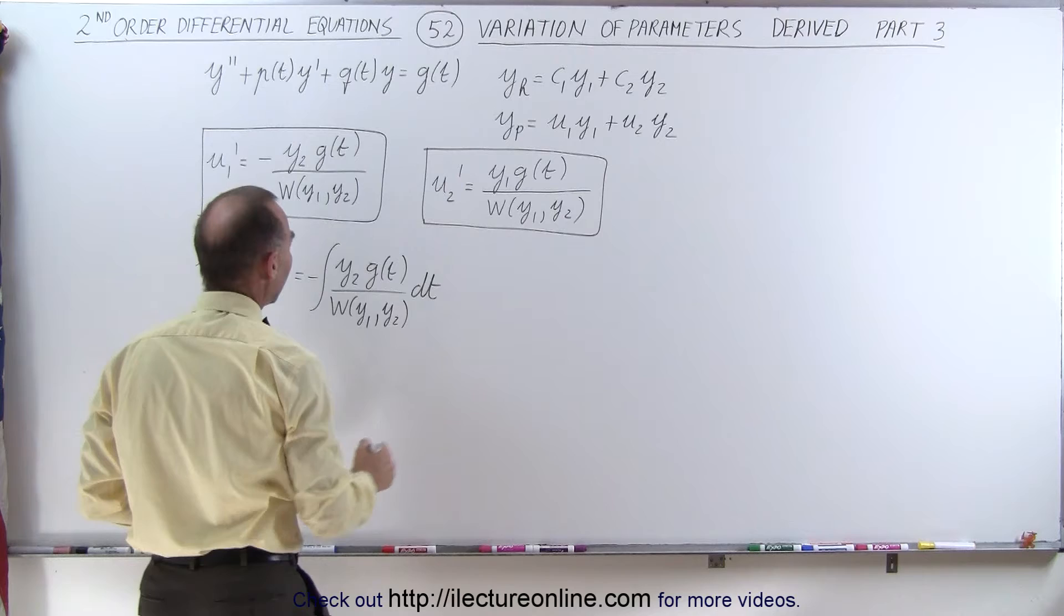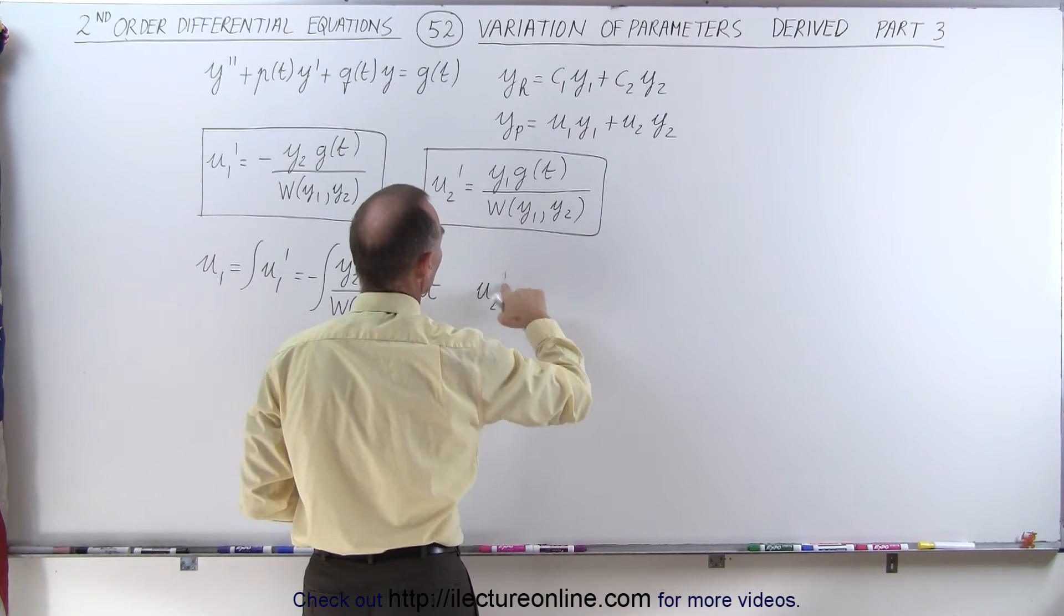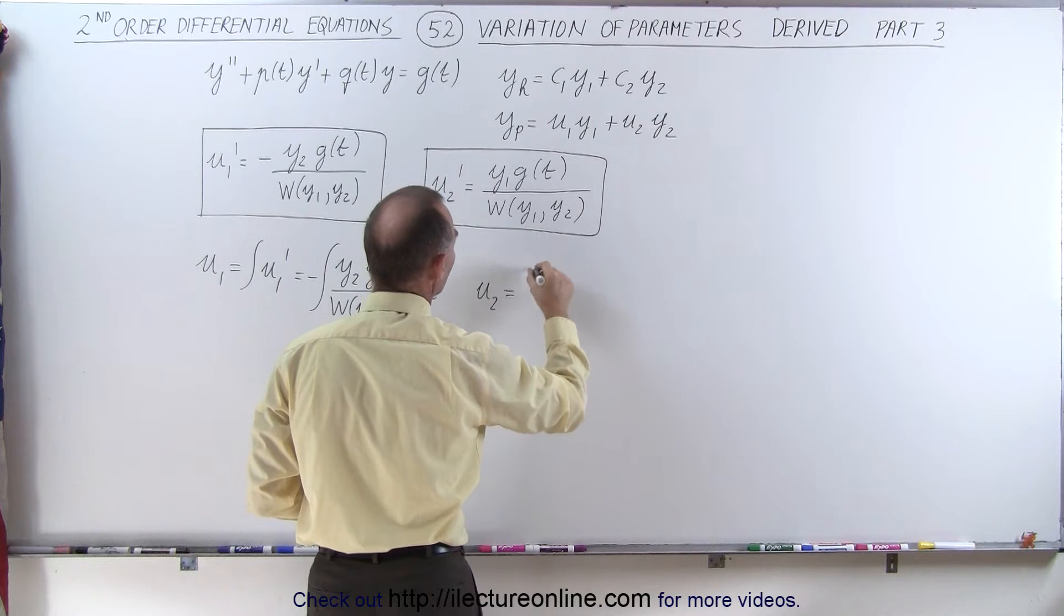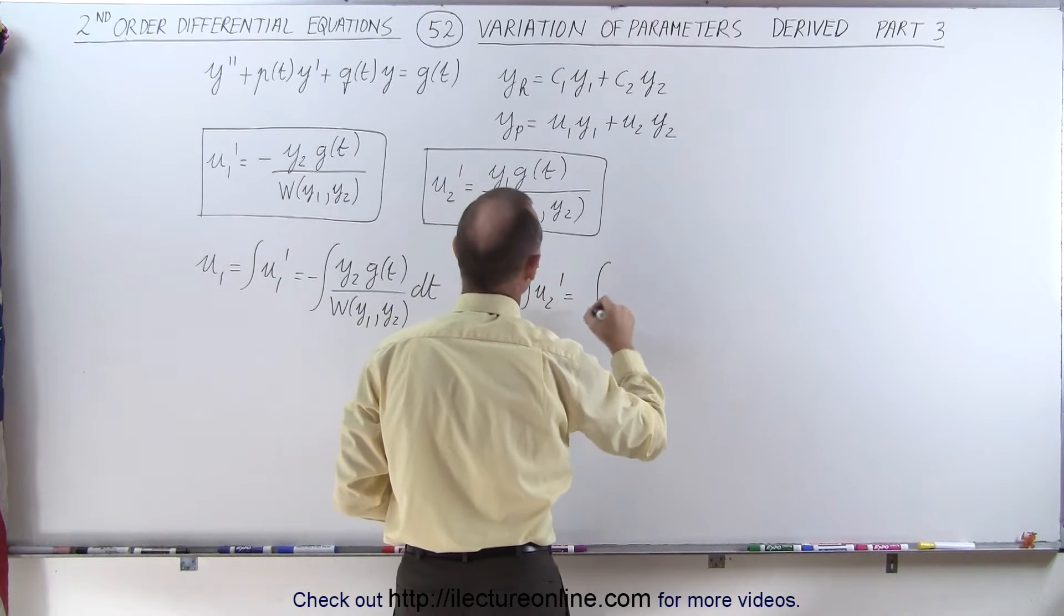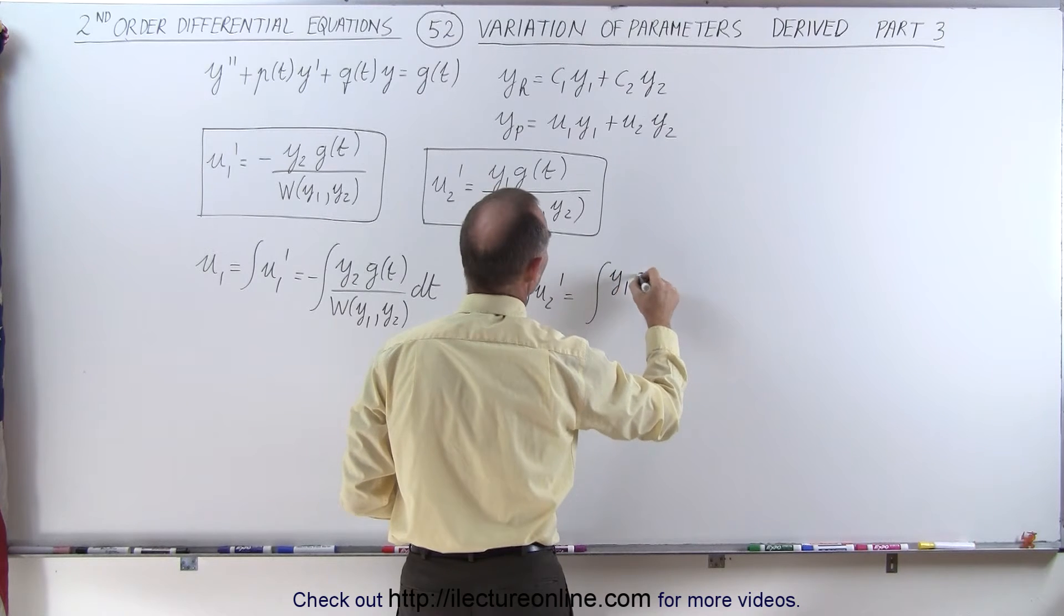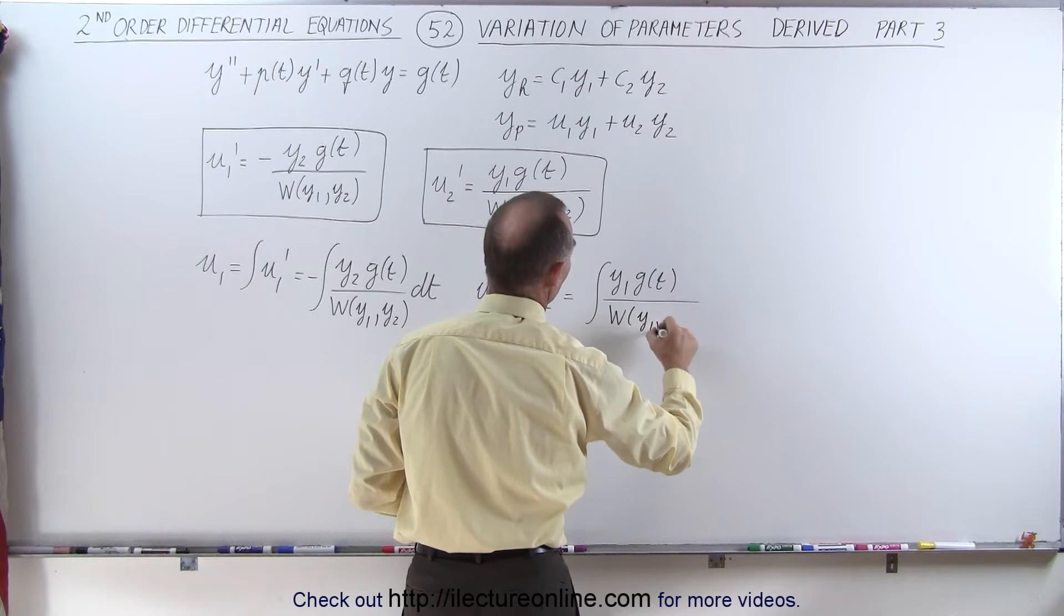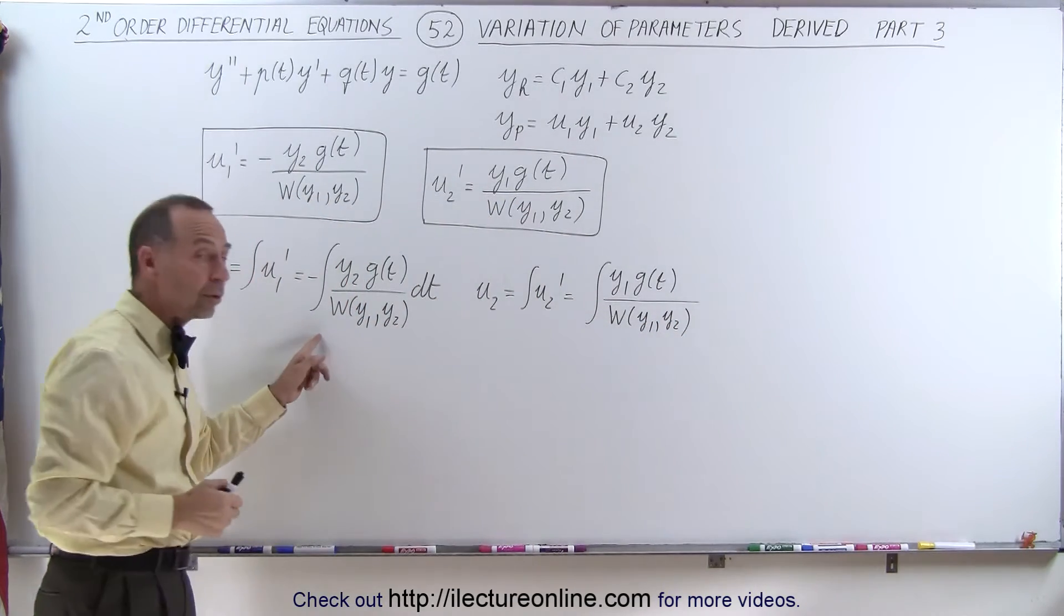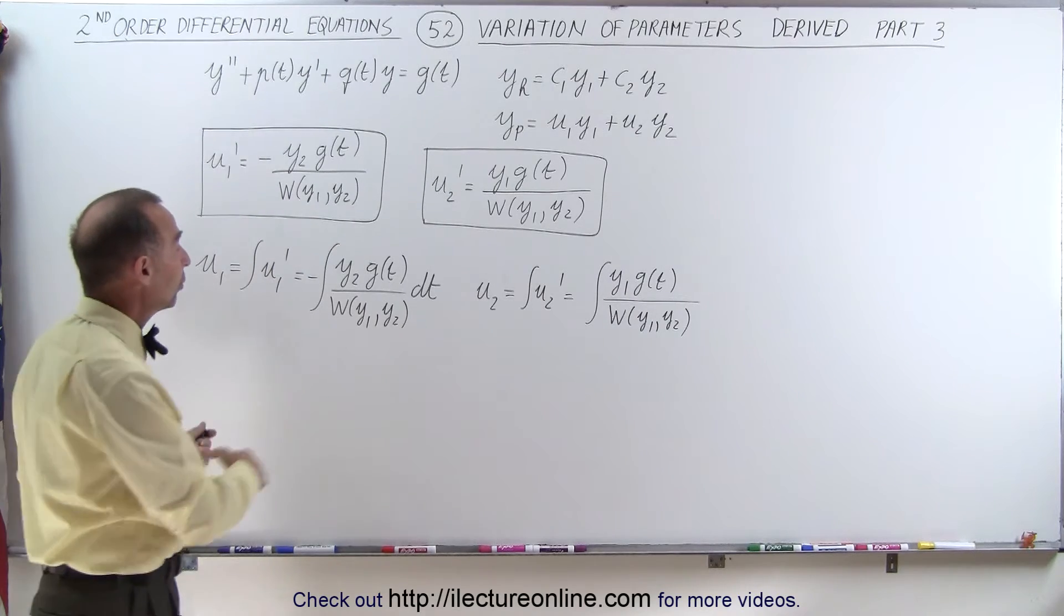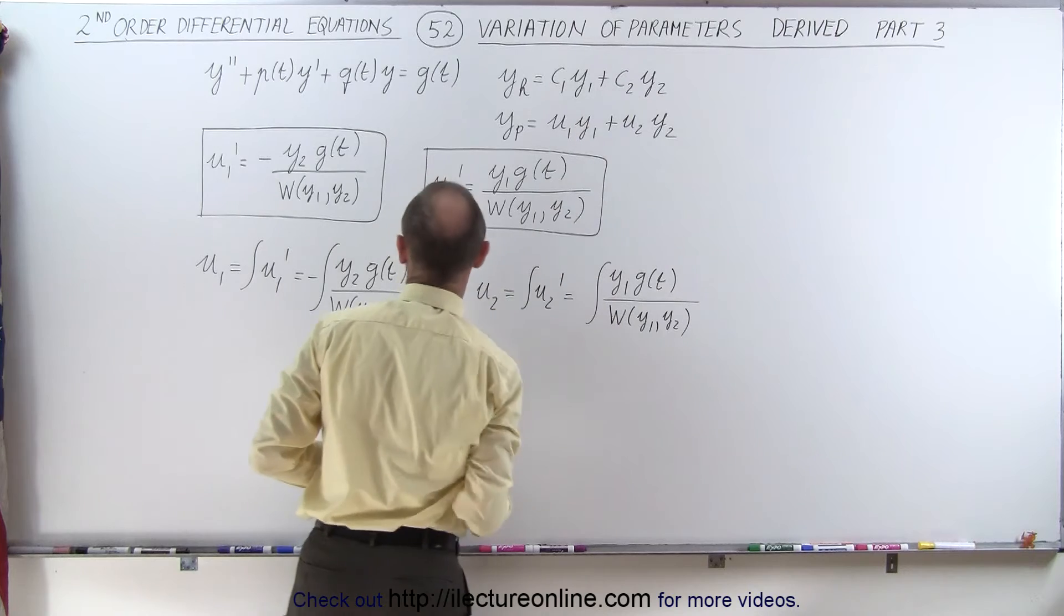And u2 is equal to the integral of u2 prime, which is the integral of y1 times g(t) divided by the Wronskian of y1 and y2, dt. These integrals are going to be doable once we know what y2 is, and that's going to come out of the homogeneous part of the solution.